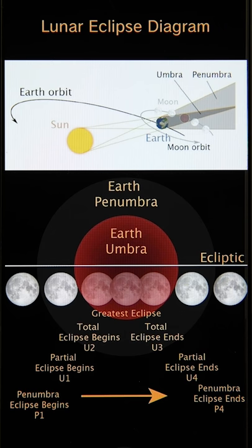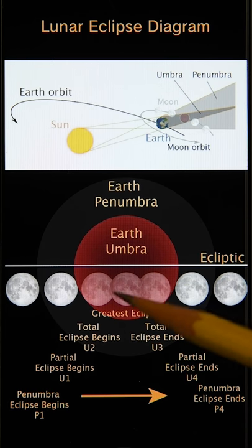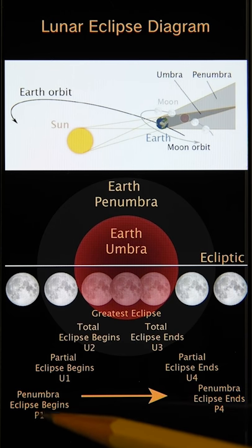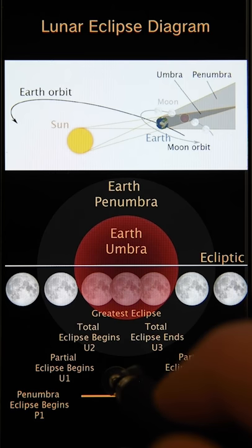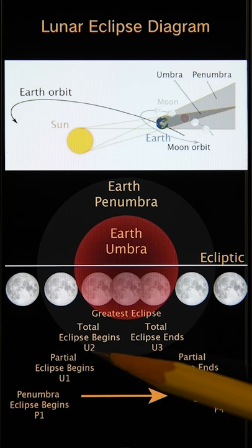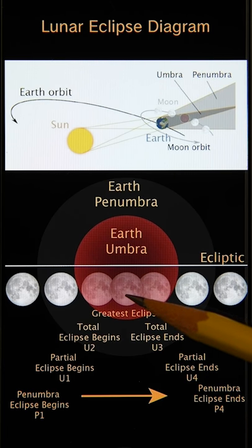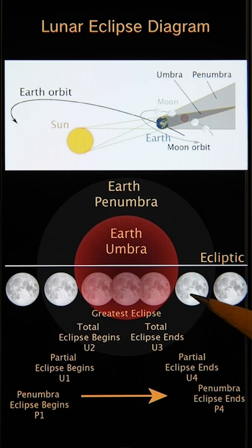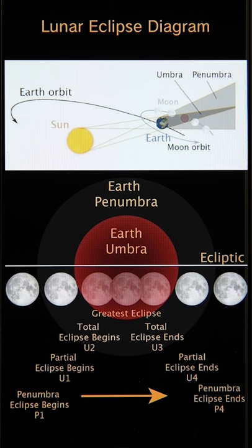These events are shown here along with the point of maximum eclipse, which is when the moon reaches the innermost position of the umbra. So in summary, we've got seven key events: one, the penumbral eclipse begins P1; two, the partial eclipse begins U1; three, the total eclipse begins U2; four, the point of maximum totality; five, the total eclipse ends U3; six, the partial eclipse ends U4; and seven, the penumbral eclipse ends P4. Just remember these P and U symbols as we'll see them in the app.